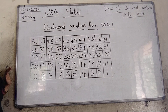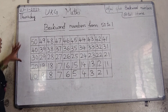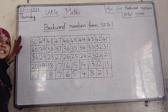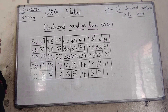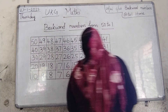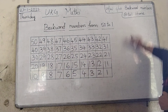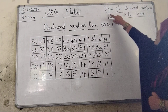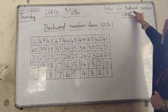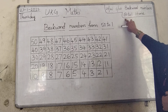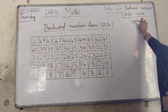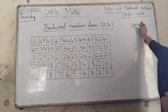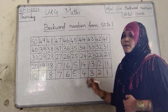These are backward numbers. All of you understand what are backward numbers? Write in your notebook very neatly in boxes. Homework: second right, backward numbers 50 to 1, one time. Write neatly all of you. Thank you. Bye.